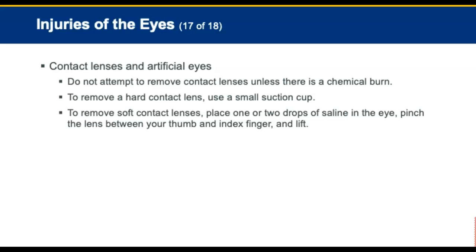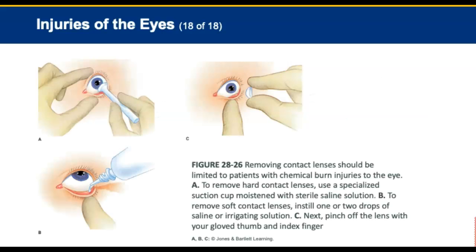Management of injuries to the eye depends on the severity of the injury. For contact lenses or artificial eyes, in general do not attempt to remove them except for chemical burns. To remove hard contact lenses, use a small suction cup specially made for contact lenses. To remove soft ones, place one or two drops of saline in the eye, then gently pinch the lens between your gloved thumb and index finger. Place the lens in a container with sterile saline solution and advise the hospital if the patient is wearing contact lenses. Care for an artificial eye as you would for a normal one.